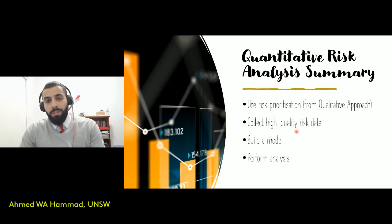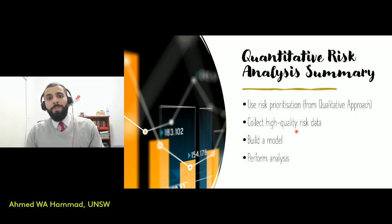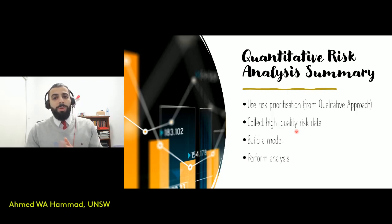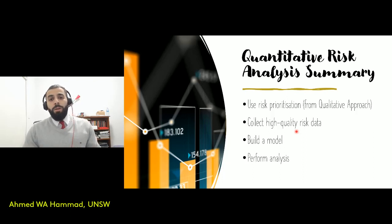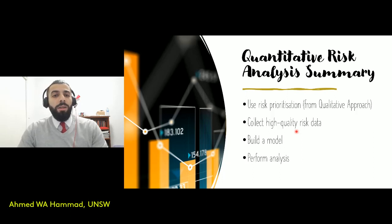You then collect high quality data — by high quality I mean specific data. If you're looking at duration, you need the expected duration, and also pessimistic and optimistic durations. For example, if an activity takes six days, the optimistic duration might be four days and the pessimistic duration might be eight days. That's what we mean by collecting high quality risk data — data that is very detailed.